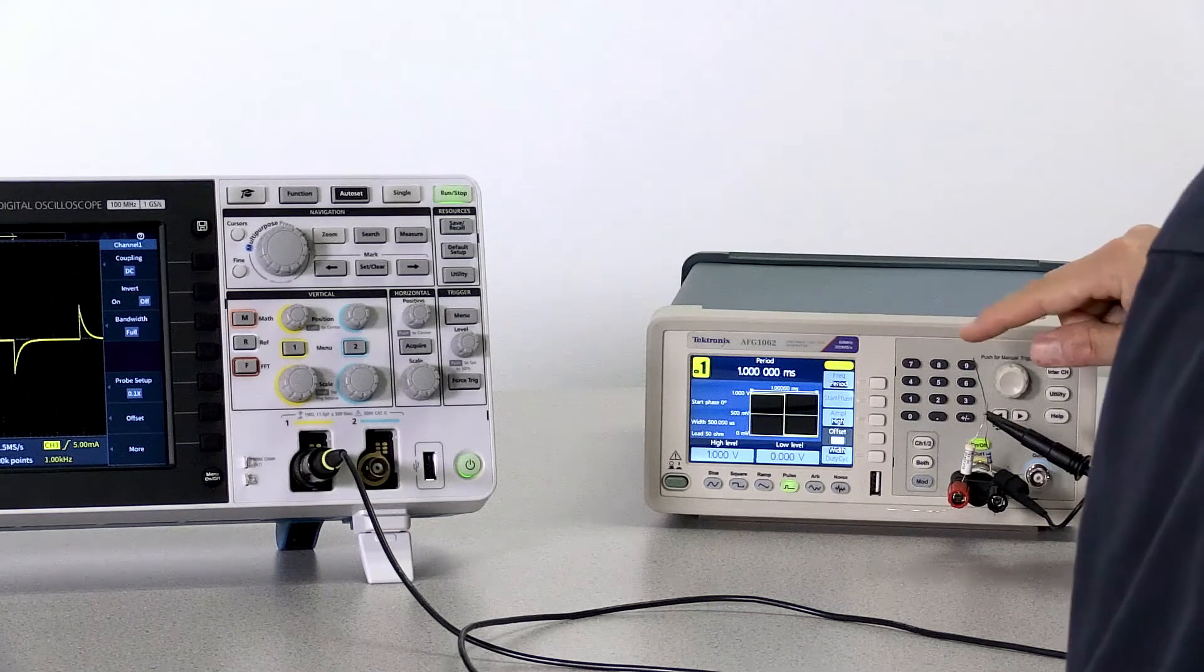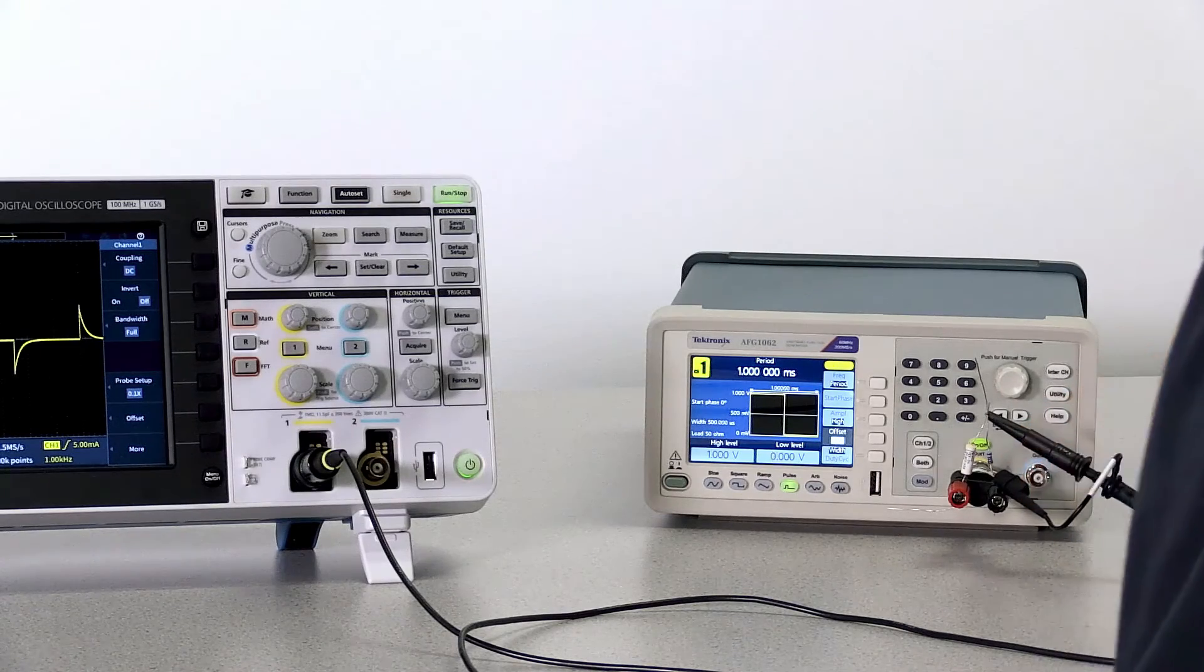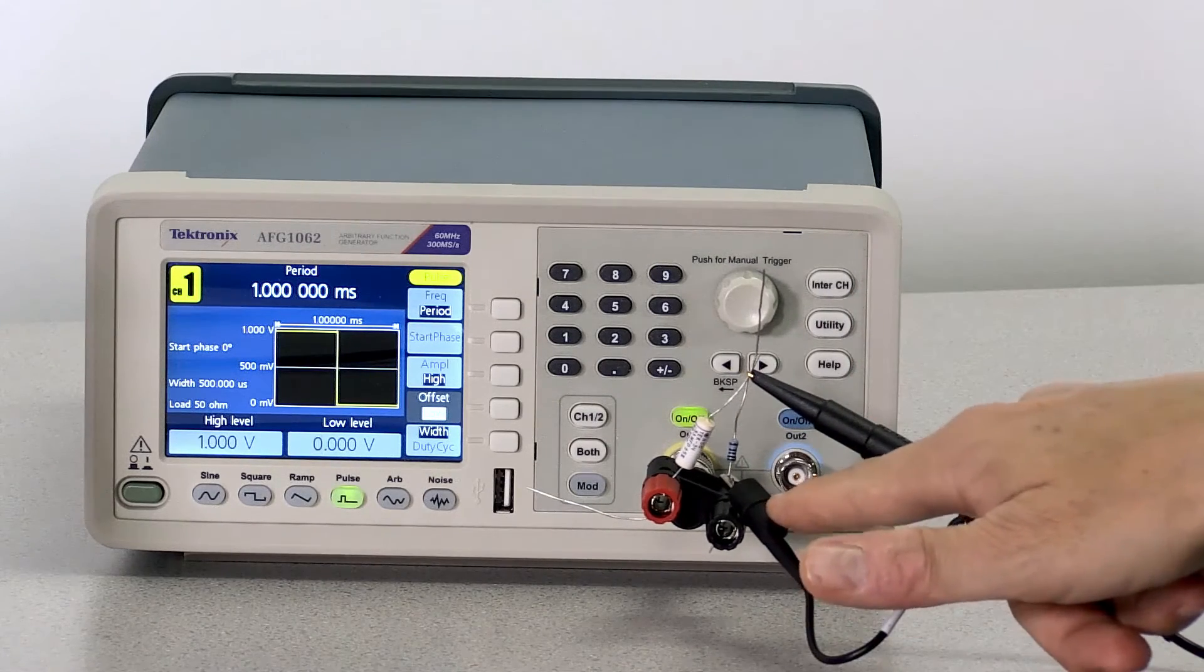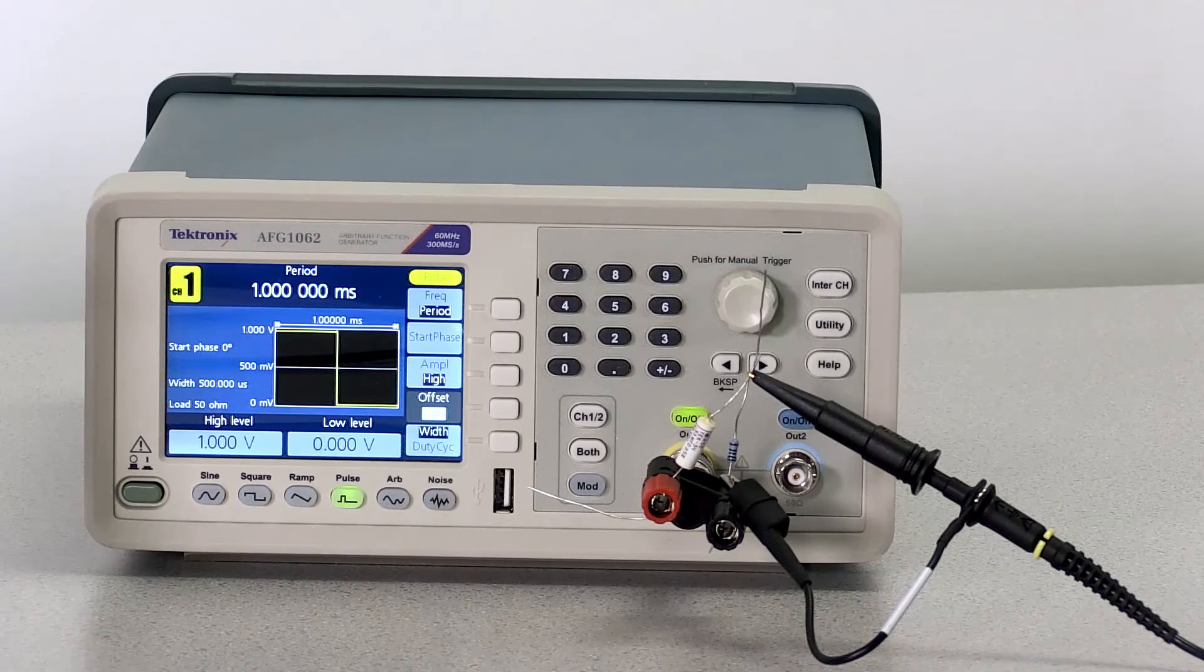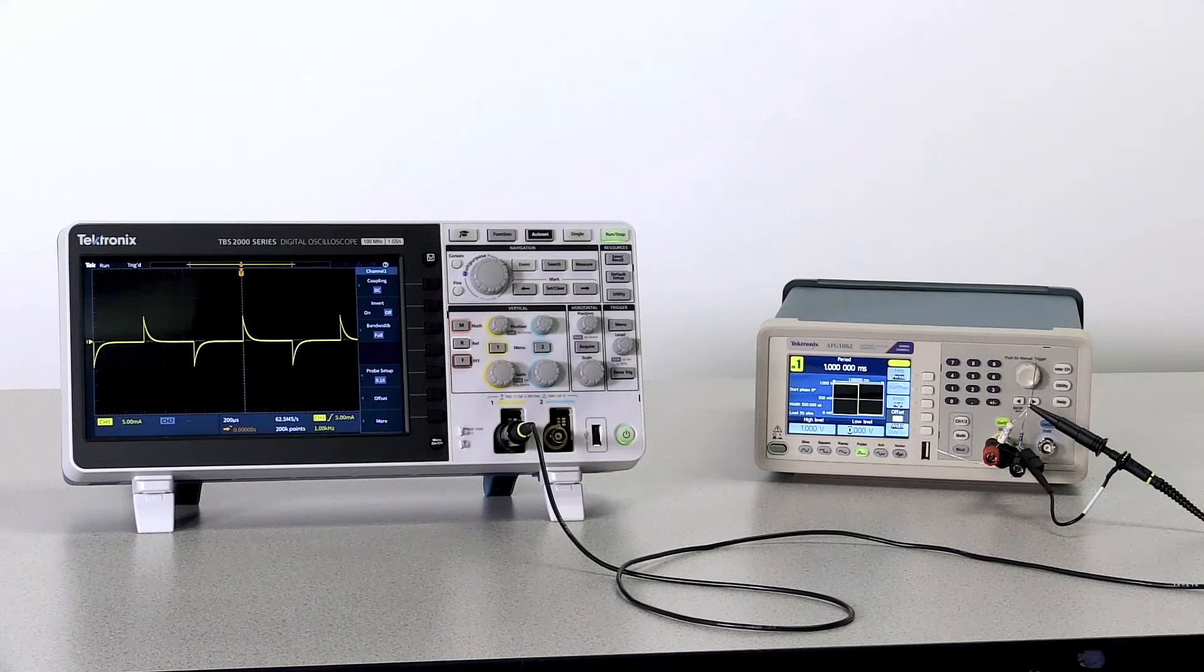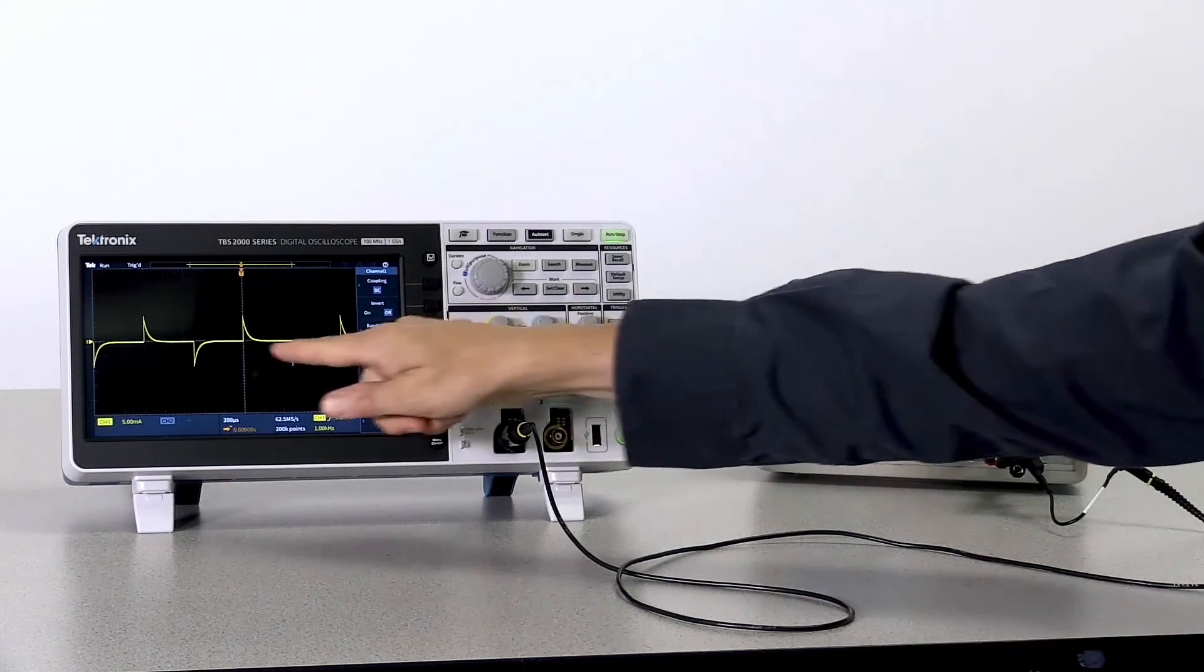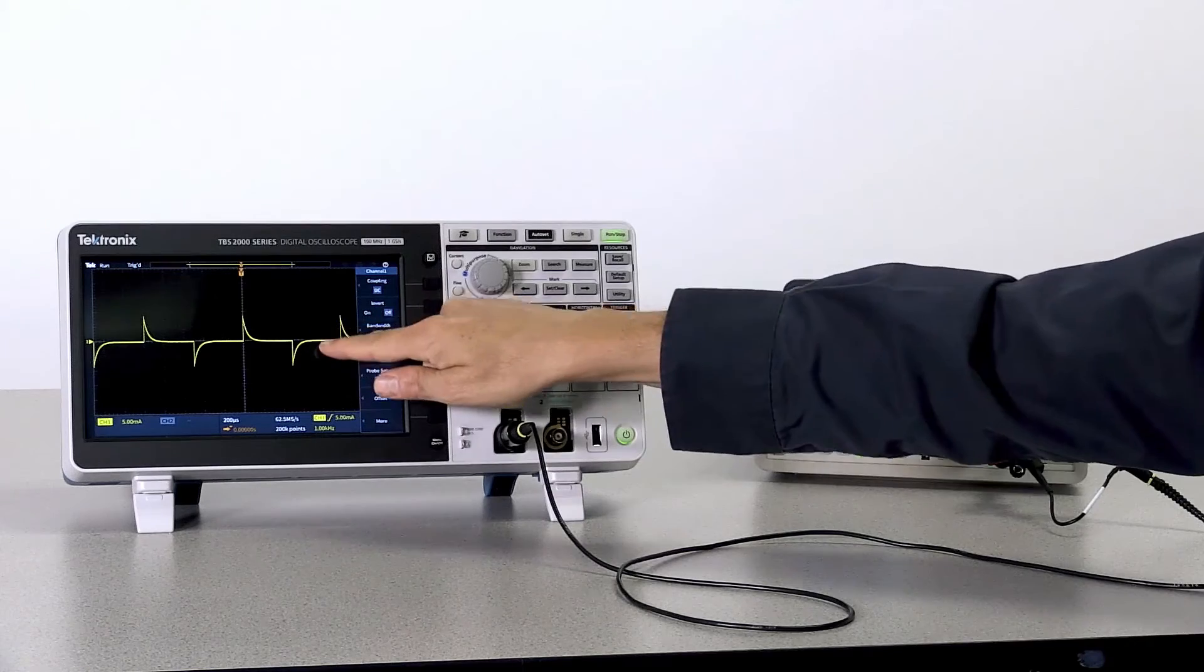In this setup, I have a 0.33 microfarad capacitor hooked up in series with a 100 ohm resistor. I have a probe hooked up across the resistor, making sure that I've got the ground of the probe tied to the ground of the generator. Thanks to Ohm's law, the resistor can convert the current flowing in the capacitor into a voltage. I've set the scope up to scale the voltage into amps. I'm driving the circuit with a positive pulse, and you can see the charging current when the pulse goes high, and you can see the discharge when the pulse goes back to zero.